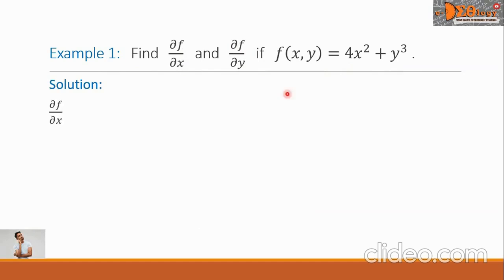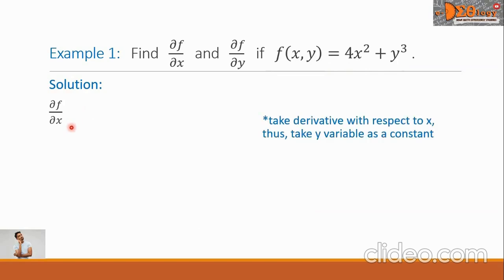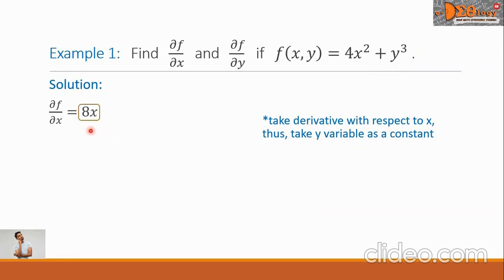Let's begin with the partial derivative of f with respect to x. We're going to take the derivative with respect to x, treating y as a constant. The derivative of 4x squared is 8x, plus the derivative of y cubed is 0, because y is a constant. So f sub x equals 8x.